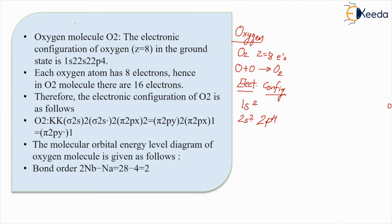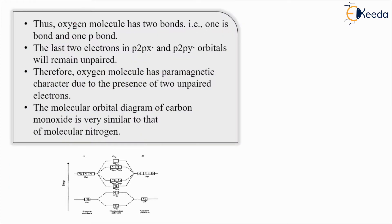Each oxygen has eight electrons, hence in O2 molecule there will be total of 16 electrons, 8 plus 8 is 16. Therefore the electronic configuration of O2 is as follows: O2:KK(σ2s)2((σ2s*)2(π2px)2=(π2py)2(π2px)1=(σ2py)1. The molecular orbital energy diagram of oxygen molecule is given as follows, bond order 2Nb-Na=28-4=2.